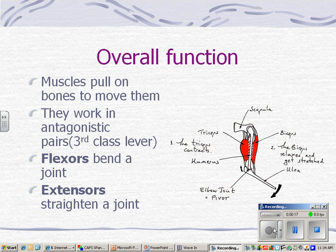Muscles work in antagonistic pairs. This is where people get confused with flexors and extensors. Flexors bend a joint and extensors straighten a joint.